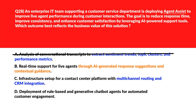Option B says real-time support for live agents through AI-generated response suggestions and contextual guidance. AI-generated suggestions improve agent performance during real-time interactions — let's keep this. Option C says infrastructure setup for a contact center platform with multi-channel routing and CRM integration. Contact center infrastructure supports routing but lacks live agent augmentation — delete.